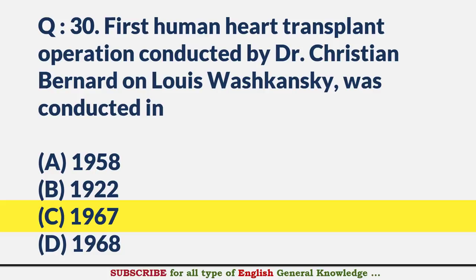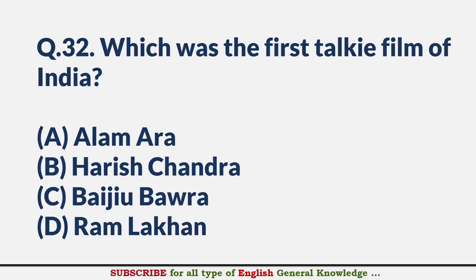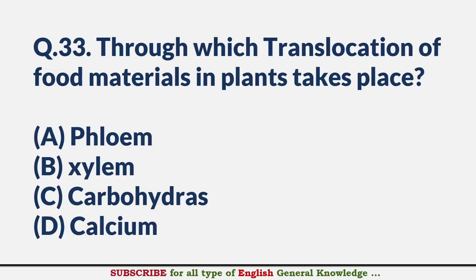'My Music, My Life' is the autobiography of which person? — Answer A: Pandit Ravi Shankar. Which was the first talkie film of India? — Answer A: Alam Ara. Through which does translocation of food materials in plants take place? — Answer A: Phloem.